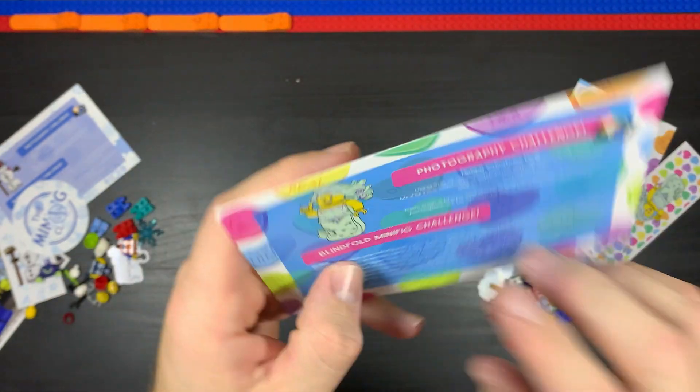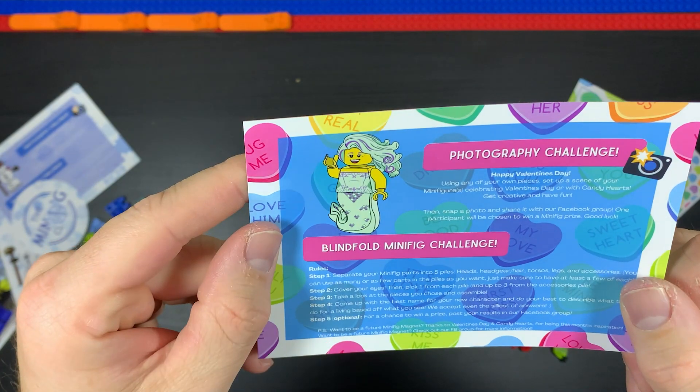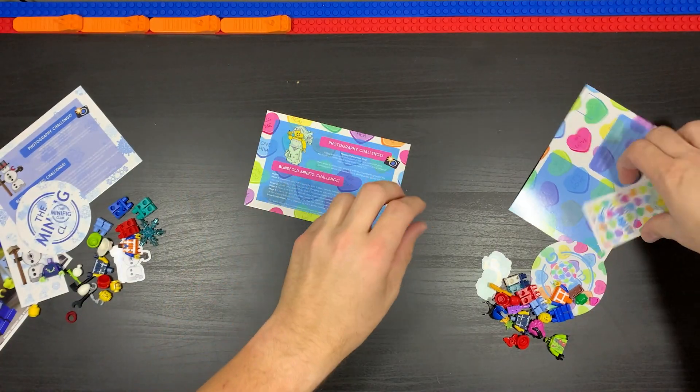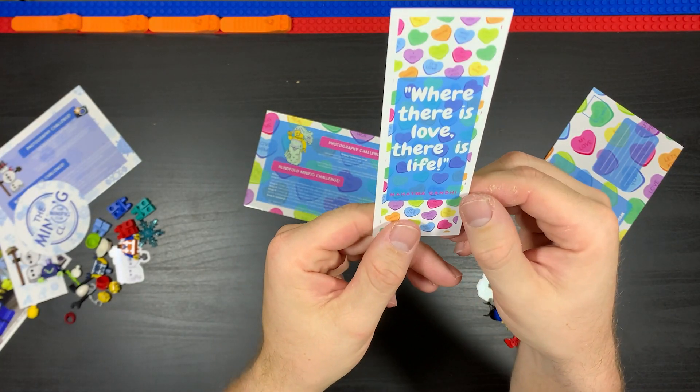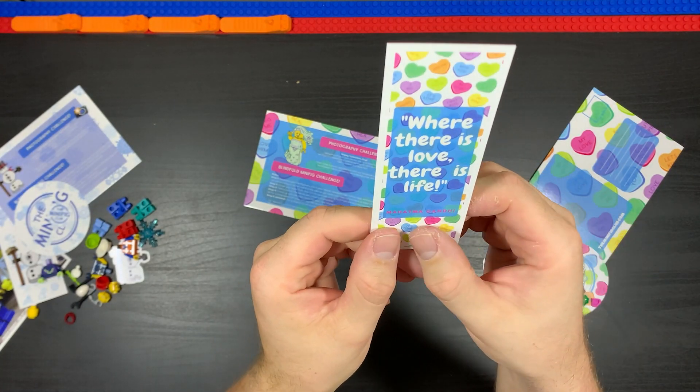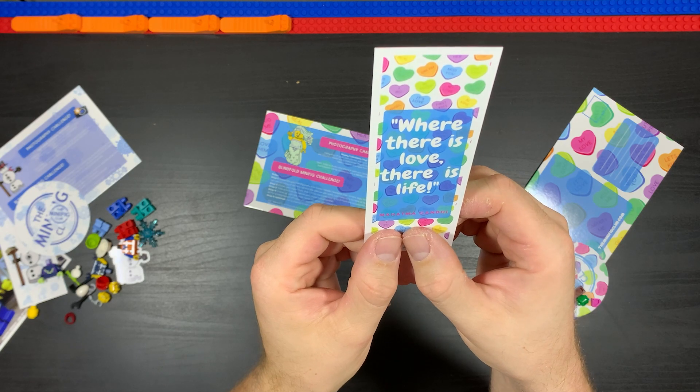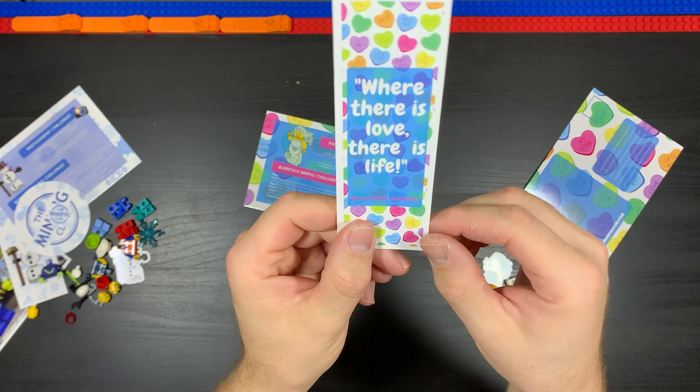As you can tell, there's a postcard, some pictures of things that people have submitted to the Facebook club, two challenges again. We got ourselves a bookmark there. On the back it says, 'Where there is love, there is life' by Mahatma Gandhi.